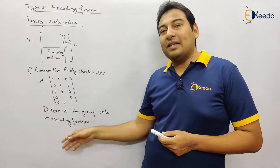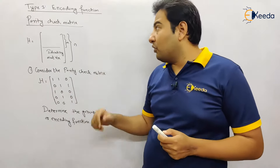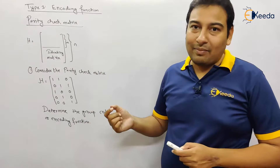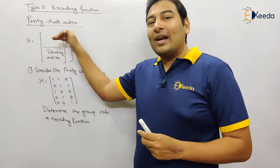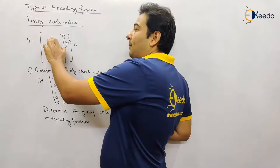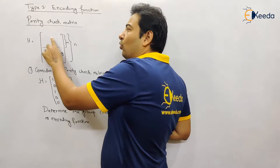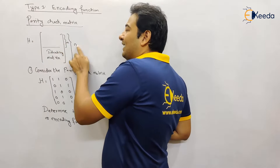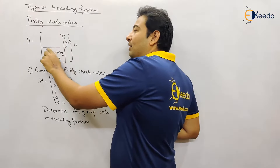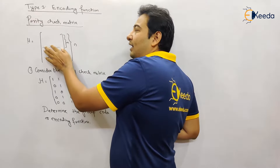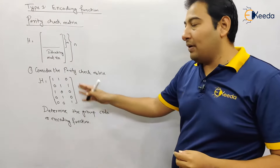We need to find the group code. We're going to solve one problem in this video, but first you need to understand what is a parity check matrix. The parity check matrix is always represented with H, and you can divide it into two parts: there will be an identity matrix, and the total number of rows of H is basically n. Suppose there are five rows in H, so n equals five. Leave the identity matrix part, and whatever rows you are left with on the top part — that is called m.